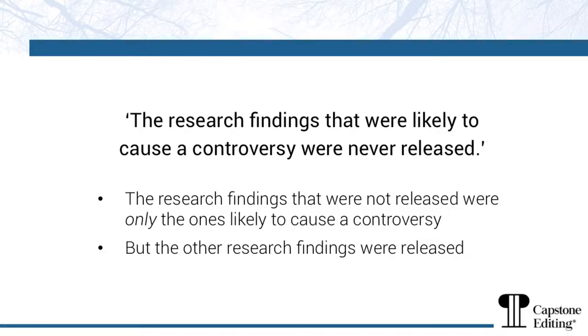So let's look at some examples of sentences with these types of clauses using which and that, to demonstrate how important it is to get it right and how you can change the meaning of the sentence by making the incorrect choice. Consider: 'The research findings that were likely to cause a controversy were never released.' This sentence means that the research findings that were not released were only the ones likely to cause a controversy, but the other research findings were released. This is a restrictive or defining clause — the subject of the sentence, the research findings, is restricted to those likely to cause a controversy.